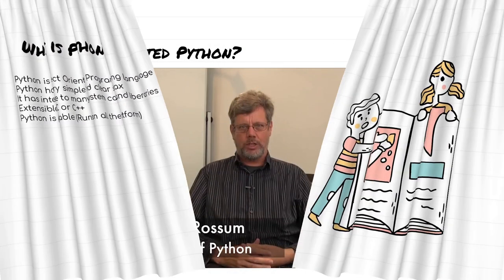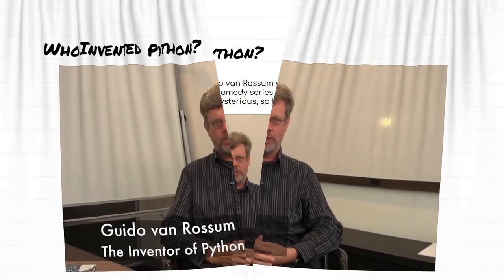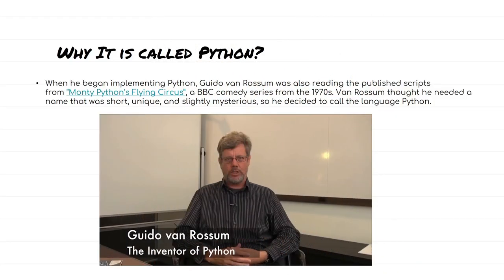So who invented Python? There is a gentleman called Guido van Rossum. He is the one who invented Python. And why is it called Python? The story is when Guido van Rossum was writing the Python programming language, at the same time he was also reading a script about Monty Python's Flying Circus. So from that he got the idea of calling it Python, because it was going to be a unique name for a programming language at that time.